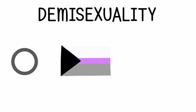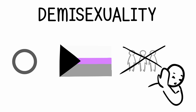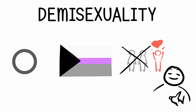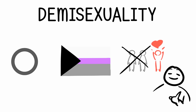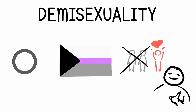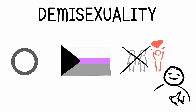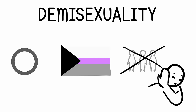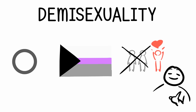8. Demisexuality. Demisexuality can technically fall under the asexual umbrella. People who are demisexual do experience sexual attraction, but only after an emotional connection is created. They wouldn't find a stranger on the street sexually appealing, but after they get to know someone well, the possibility of sexual attraction is there. Demisexuality is considered the halfway point between asexuality and allosexuality — those who experience sexual attraction.